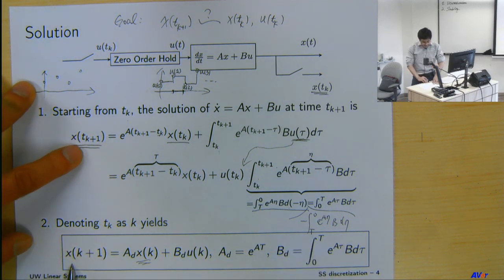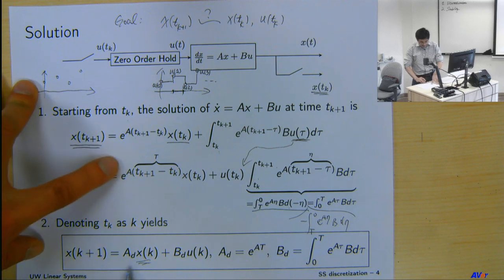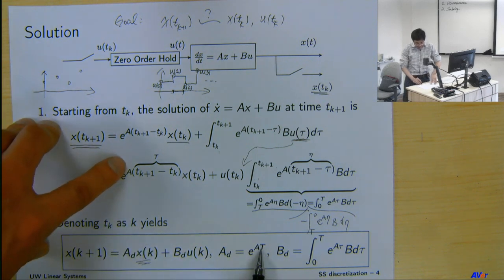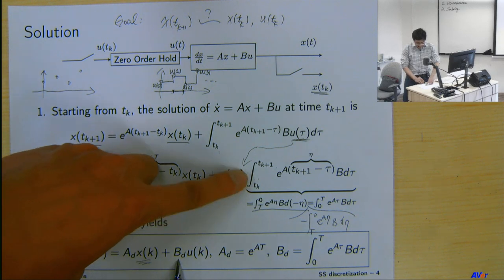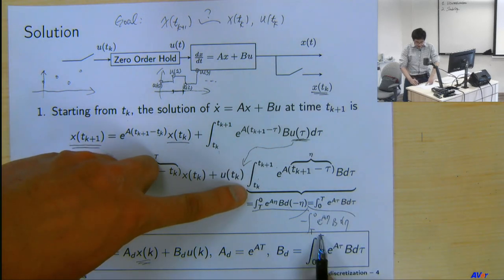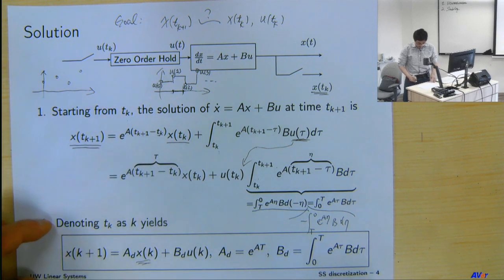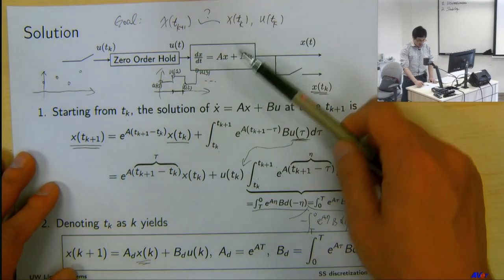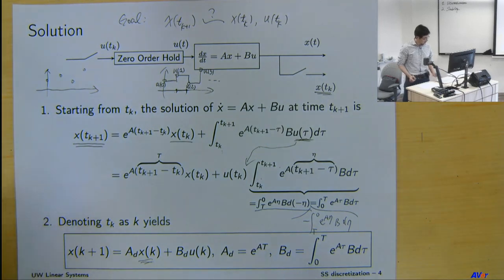As a sum up, we have thus derived the relationship between x at the discrete time domain, instance k plus 1, how it relates to xk and uk. So these coefficients, the discrete time A matrix, A_d, is e^(AT). And then the discrete time B matrix is integration from 0 to T, e^(A*tau) B d tau. So that's the discrete time model. If you have a continuous time state equation and the zero order hold.